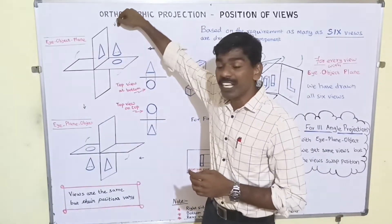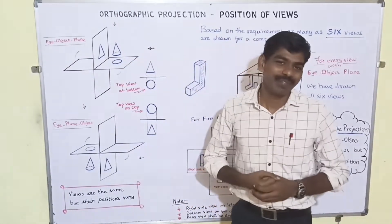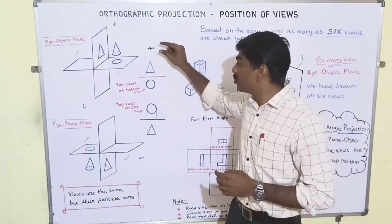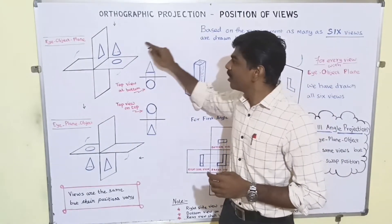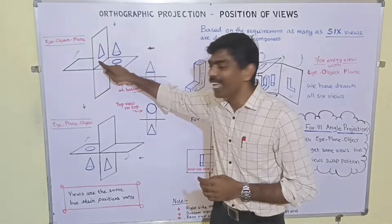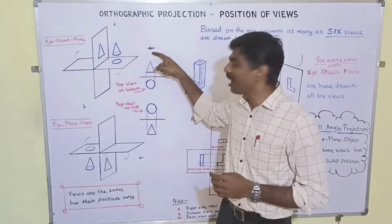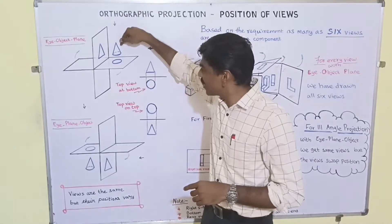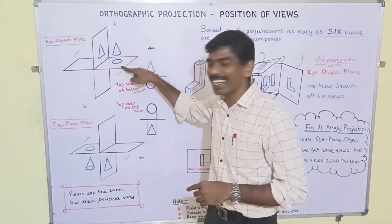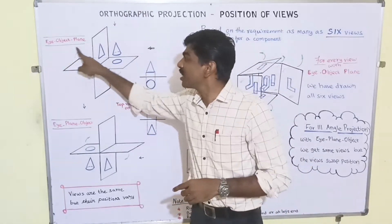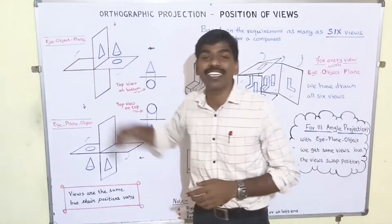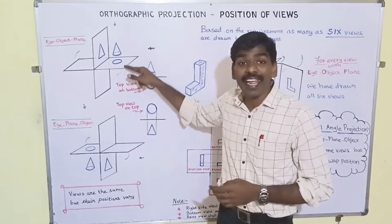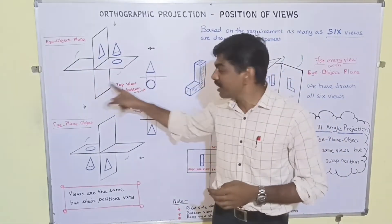One important thing to note: in the front view the order is eye, then object, then the plane. In the top view it is the same fashion — eye, object, and plane. This is how first angle projection works. Once we rotate the horizontal plane 90 degrees clockwise, we get the layout like this.